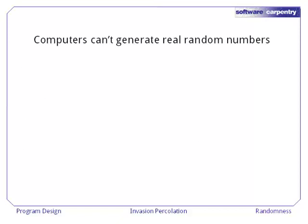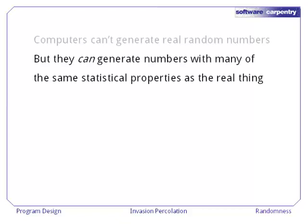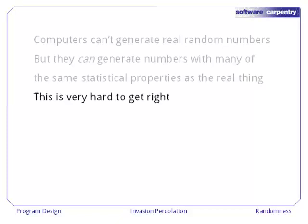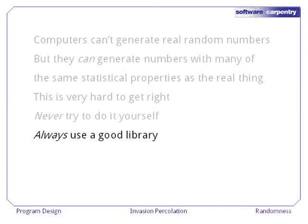In fact, computers can't generate real random numbers. But if you're careful, they can generate numbers with many of the same statistical properties as the real thing. This is very hard to get right, so never try to build your own random number generator. Instead, you should always use one from a good, well-tested library like Python's.